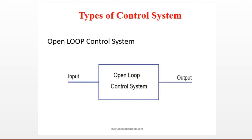Let's move on to the types of control systems. The first one is the open loop control system. In an open loop system, you give some input, you do some process, and you get some output — and whatever output you get, you have to accept it. You cannot have control over that output.